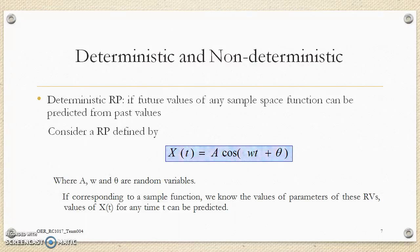Deterministic and non-deterministic random processes. Deterministic random process: if the future values of any sample space function can be predicted from past values. Consider RP defined by